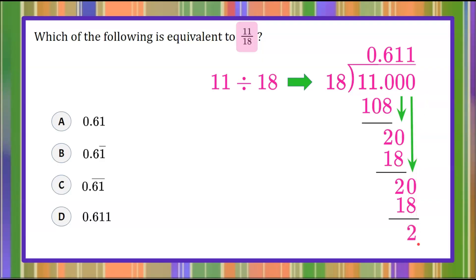We can see that if we bring down another zero, it's going to go in one time, we're going to have a remainder of 2. So this is going to continue being 1 infinitely.